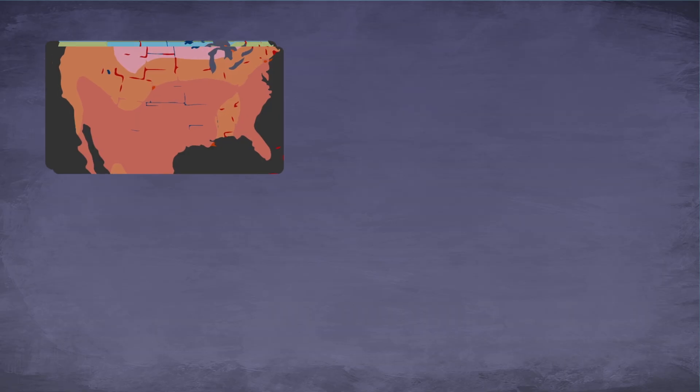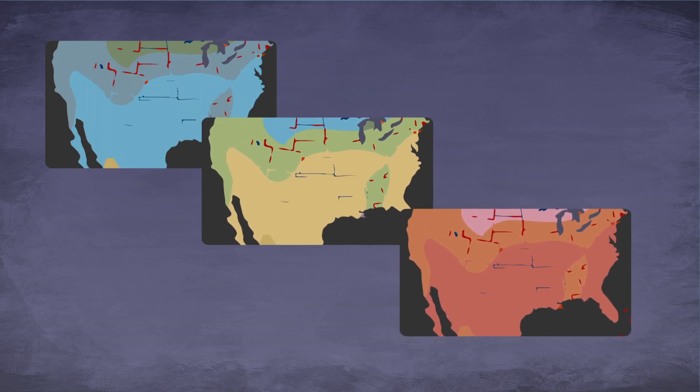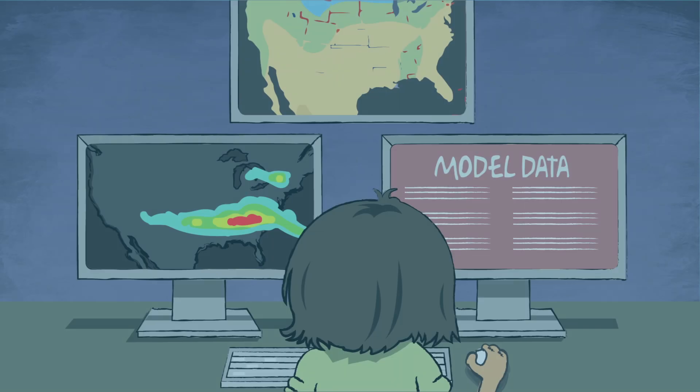The colorful maps and the maps from the forecast offices then go to your local weather forecaster. The forecaster combines the information from these maps with lots of other information like model forecast data and radar data to make predictions about the upcoming weather in your area.